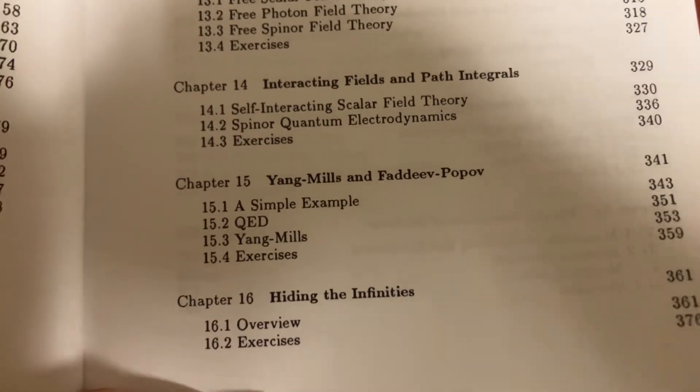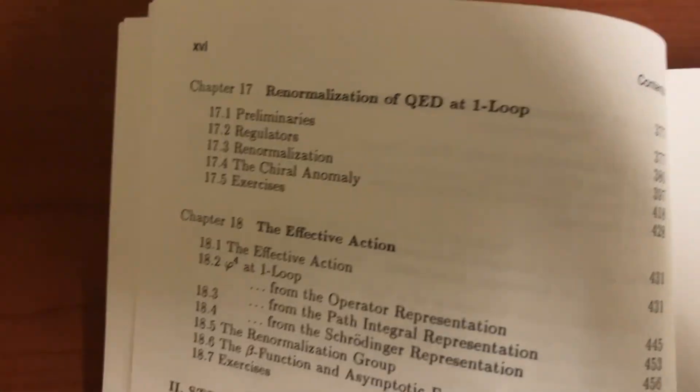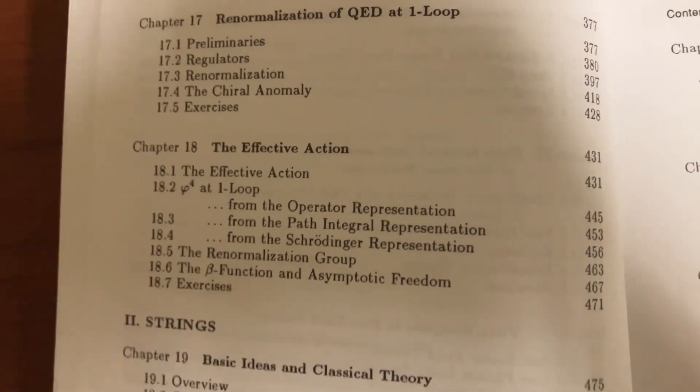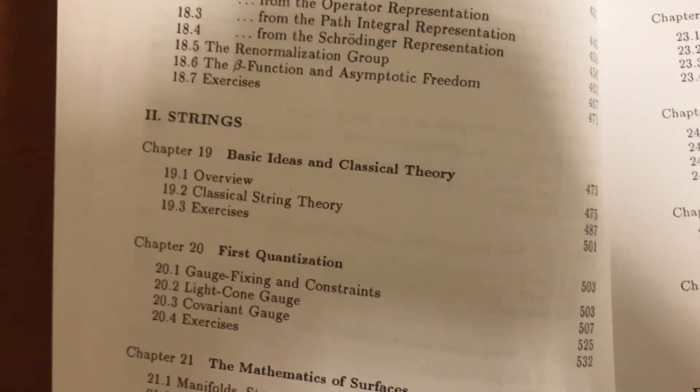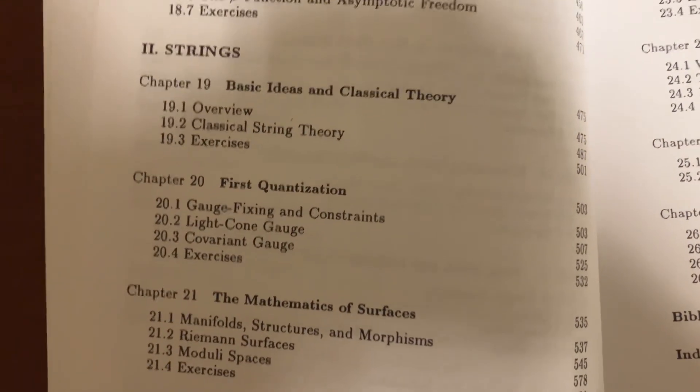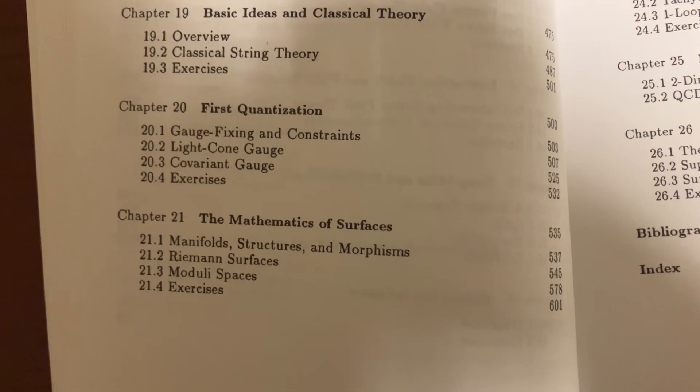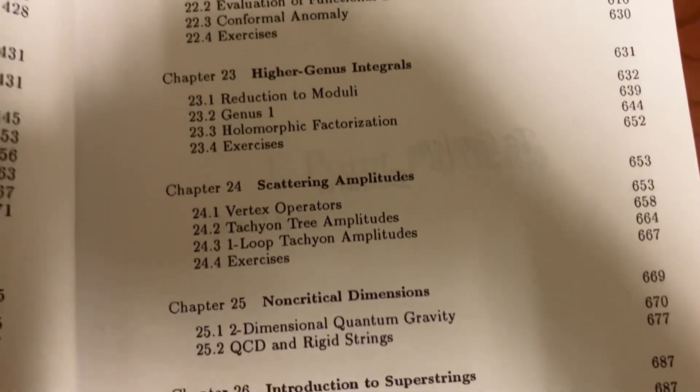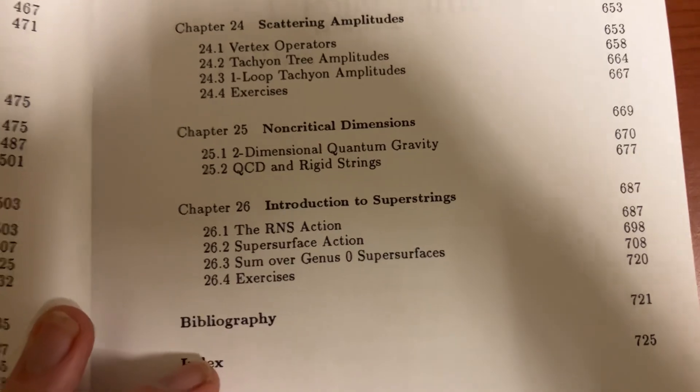And then finally, we're getting to maybe the effective action. So this is the string situation that we need to get into. We can get into classical string theory, gauge covariance, spaces and surfaces, and then we can get into the partition function and the scattering amplitudes and the super strings.